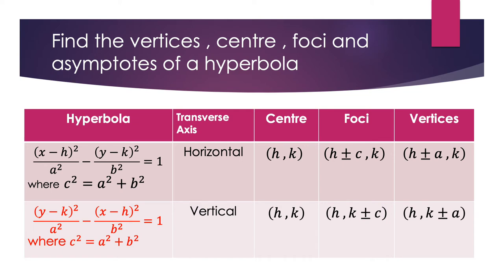If the y term is positive, then we can conclude that the transverse axis is a vertical line. The center is at coordinates (h, k), the foci are at (h, k ± c), and the vertices are at (h, k ± a).